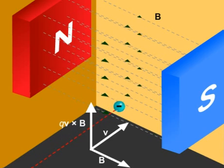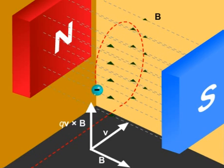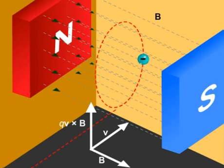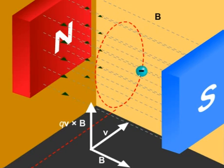So the particle will describe a circle if v and b are perpendicular to each other.